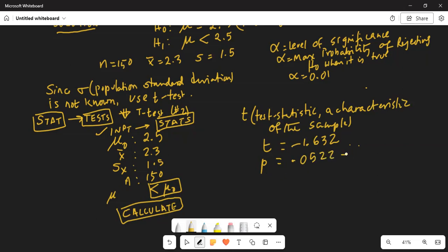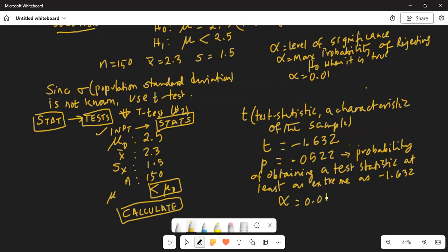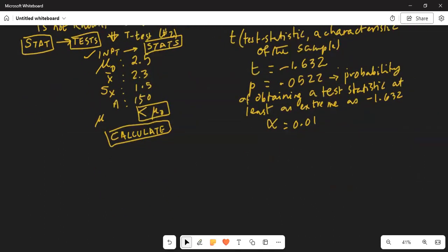P is the probability of obtaining a test statistic at least as extreme as minus 1.632. Now, our alpha level of significance is given to us is 0.01. We see p is greater than alpha. Decision: Do not reject h0.